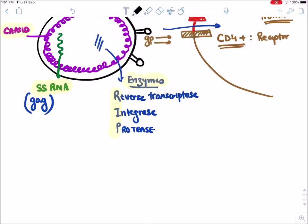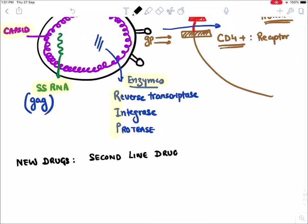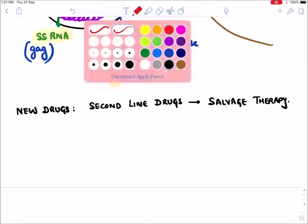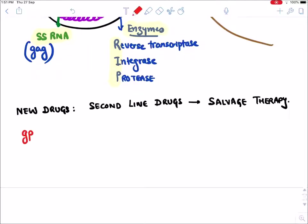Before the virus enters the cell, let's discuss certain new drugs for HIV. Remember, these new drugs are not first-line drugs — they are second-line drugs, and they are only given as salvage therapy. Salvage therapy means they are given in resistant cases where first-line drugs have failed. The first new drug is a GP41, that is glycoprotein 41, inhibitor.